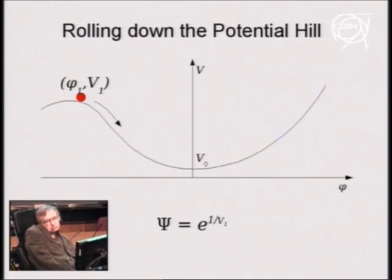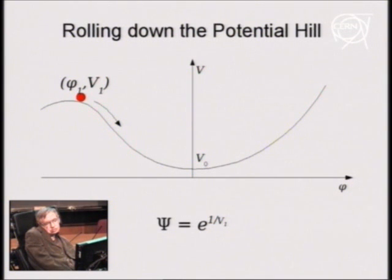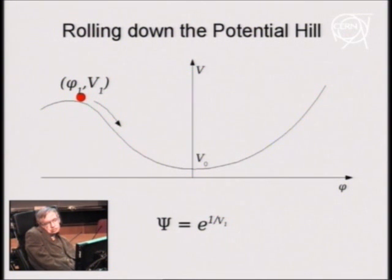What does the no boundary condition predict for the universe? To answer this, one needs to study how the amplitude for a spontaneously created universe depends on the present state of the universe. Consider first the amplitude for a homogeneous isotropic present state. This will be given by solving the field equations for a region bounded by a 3-sphere of radius A, on which there is a homogeneous scalar field, phi.